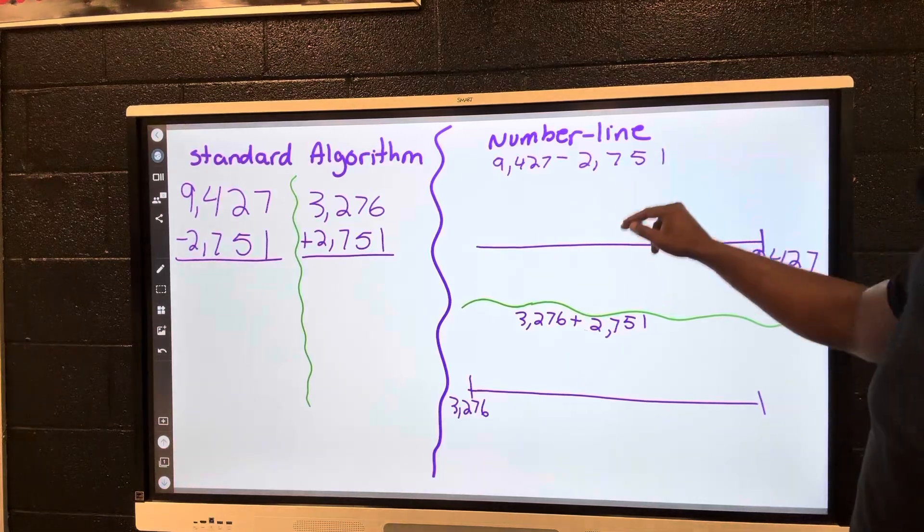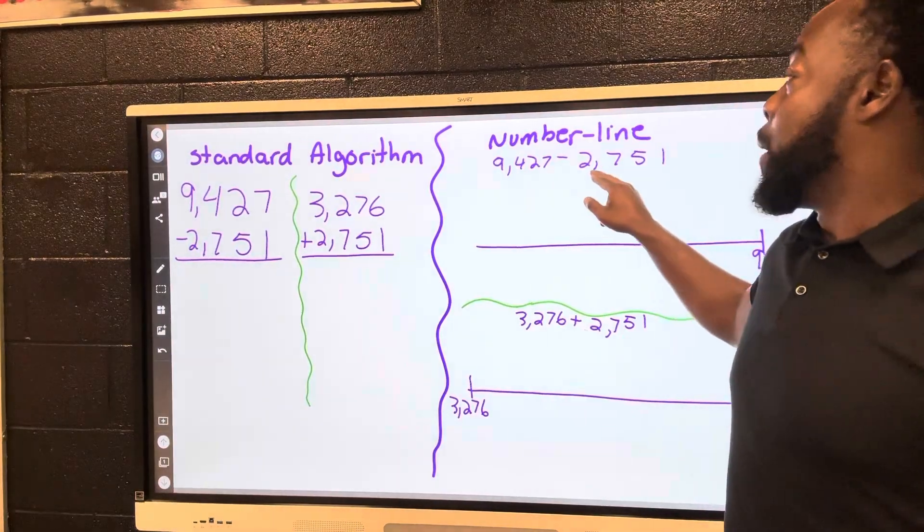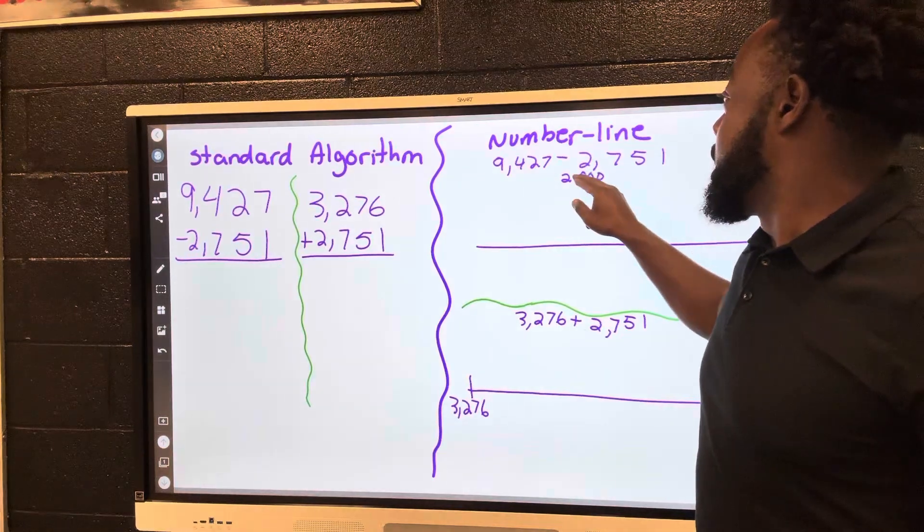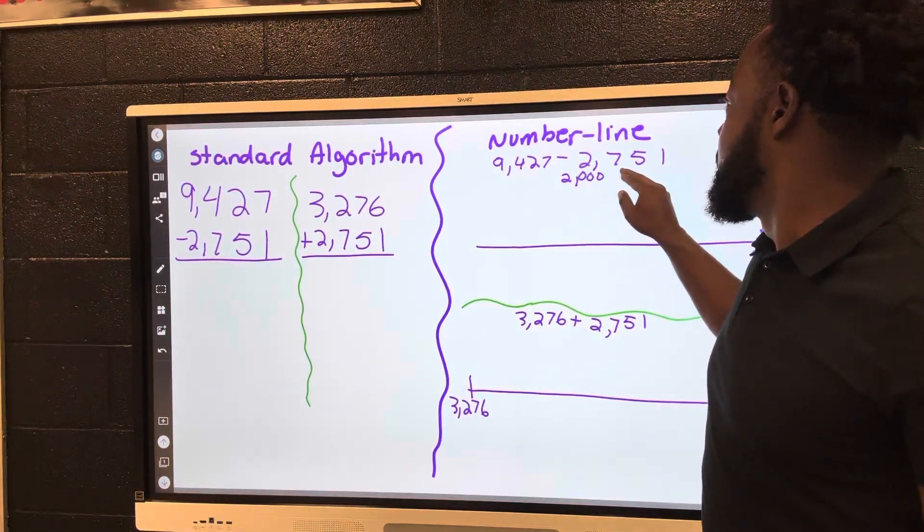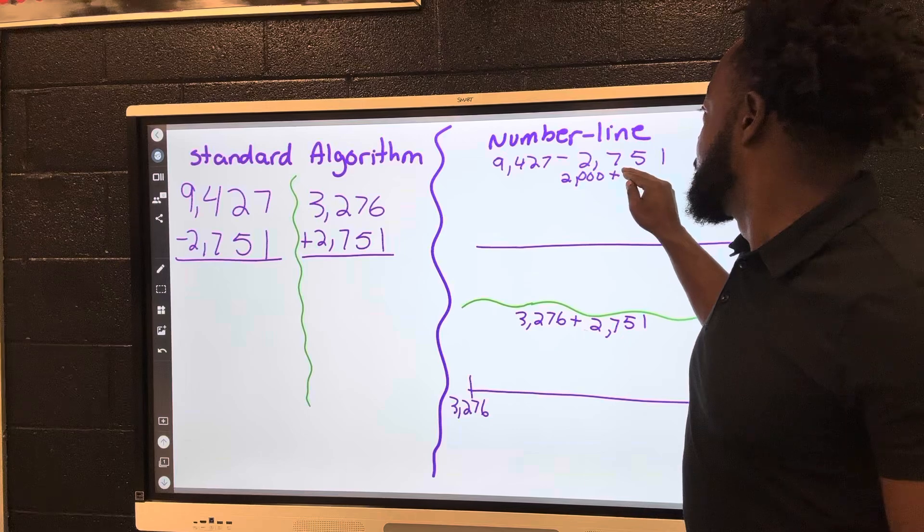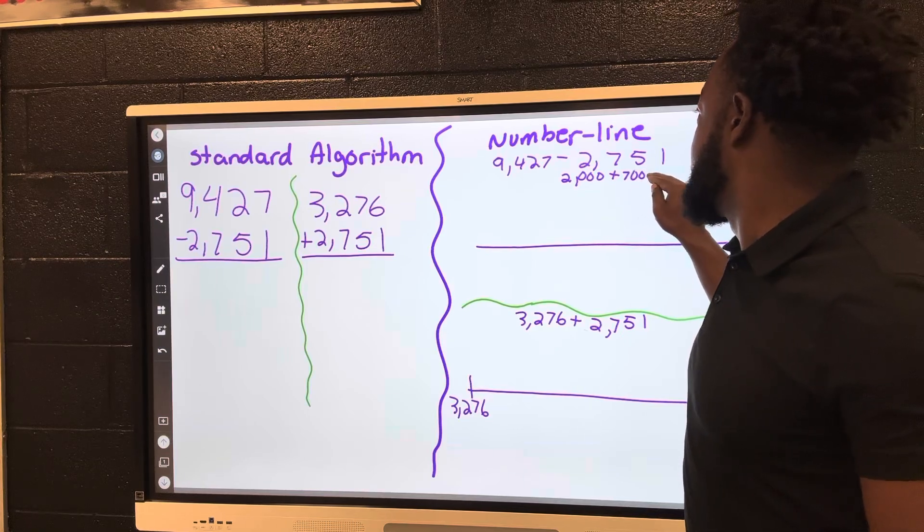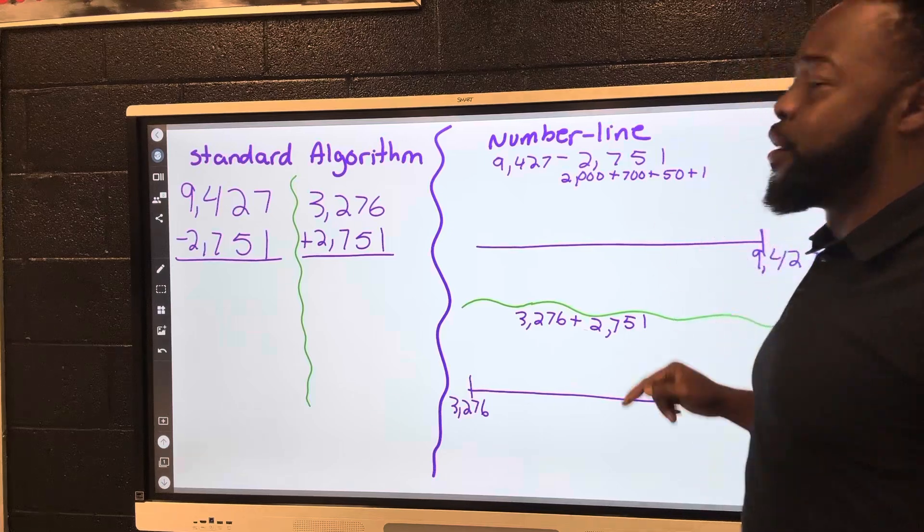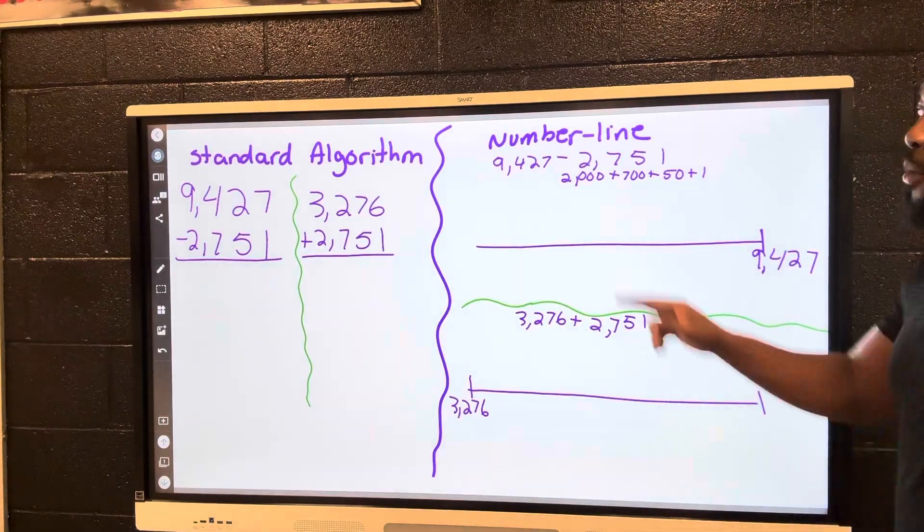What I want to do is I want to expand the second number. So if I expand this number, now I'll know how to do my loops. I'm starting at 9,427, which is right here.